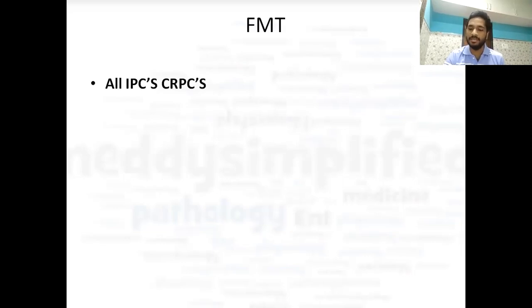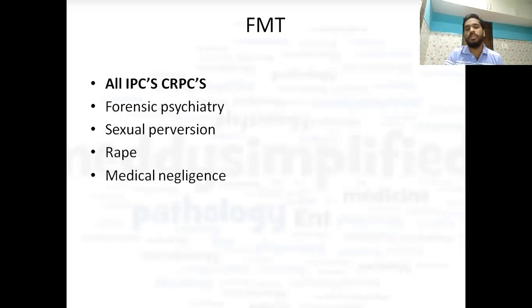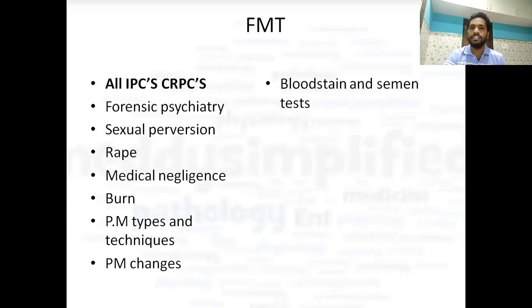Now talking about forensic medicine. First of all you should know all the IPCs and CRPCs. After that forensic psychiatry — McNaughton's rule and related questions are very important, including what the rule is for the insane. Sexual perversion is important. Rape is a very important topic. Medical negligence — if you as a doctor do any kind of negligence, what kind of punishment can you get. Burns is covered in surgery and also in forensic medicine. Post-mortem types and techniques, and post-mortem changes are very important. Blood stain and semen tests — which test is better and which is the best — that kind of question has been asked.